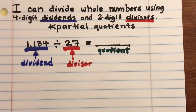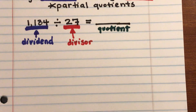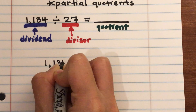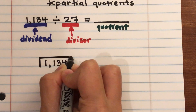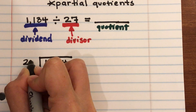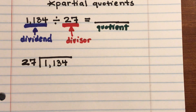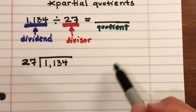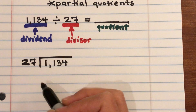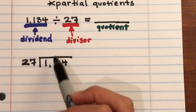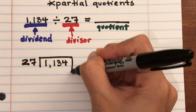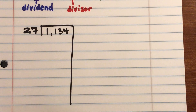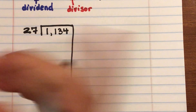Let's get started with partial quotients. Partial quotients is division, but instead of arriving at one final answer all at once, you arrive at parts of the final answer — parts of the quotient — and that's why it's called partial quotients. You set up your problem with the dividend inside the division symbol and the divisor on the outside, and you draw a bar on the side.